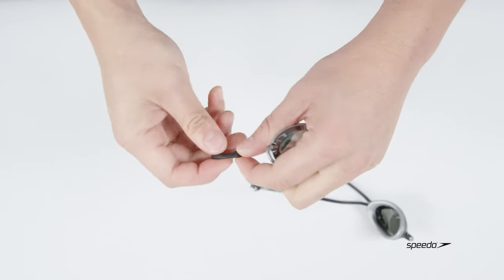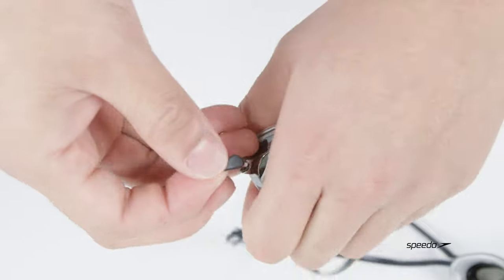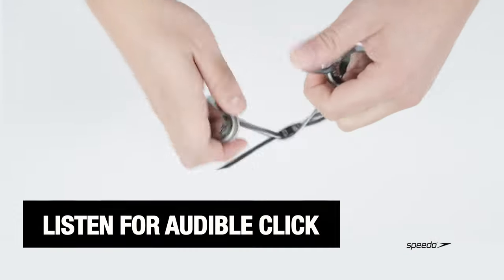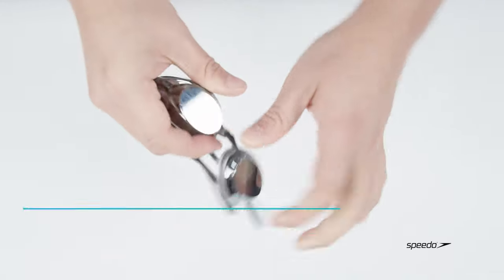To insert the nose bridge, line the top of the goggle up with the curve and insert until you hear the audible click sound. Repeat on the other side and you should be good to go.